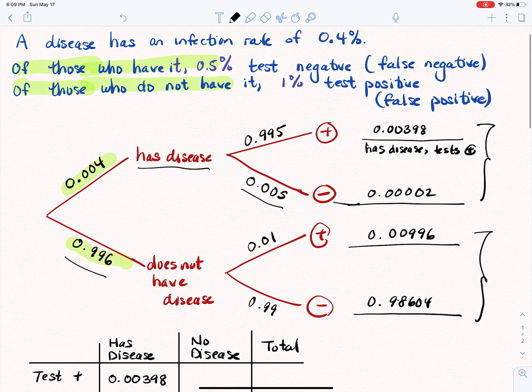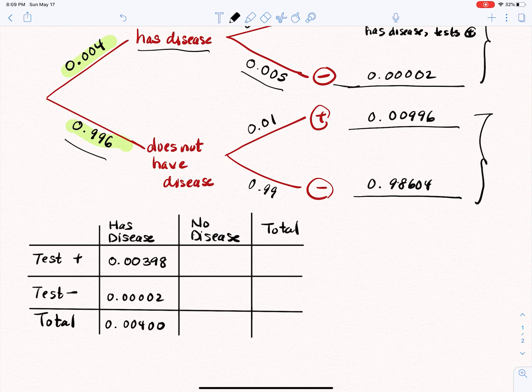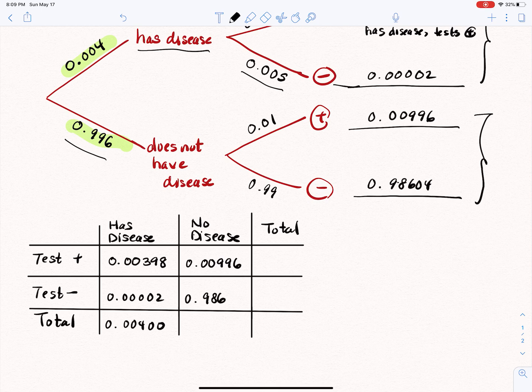So that again, that just further tells us that that is how everything is breaking up. So if they test positive and do not have the disease, that's the 0.00996. And this is the 0.98604, no disease and test negative. And sure enough, if we were to add these together, we would get 0.996, which is what we should get. So notice if I add the rows, or if I add the two entries in the bottom row together, we get 1, representing that this whole thing is just pieces of a pie, right?